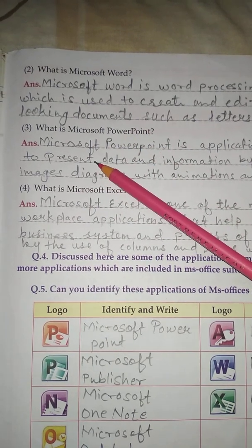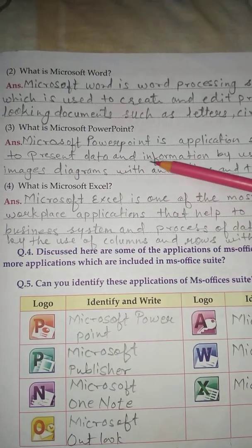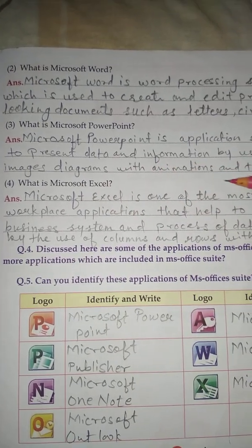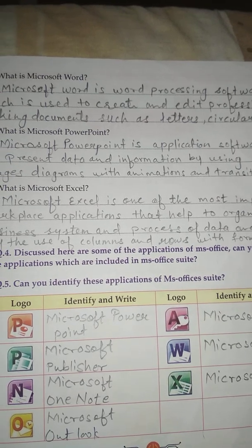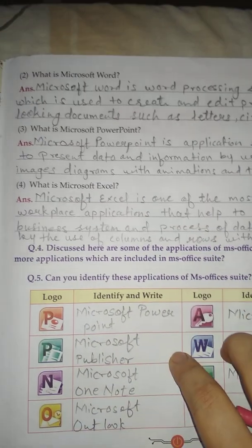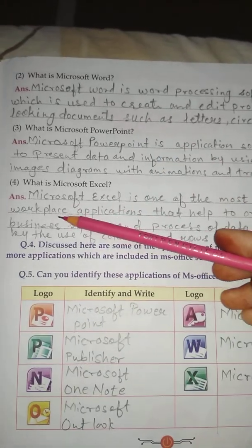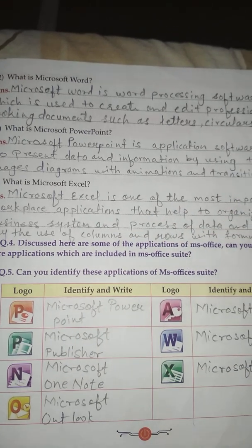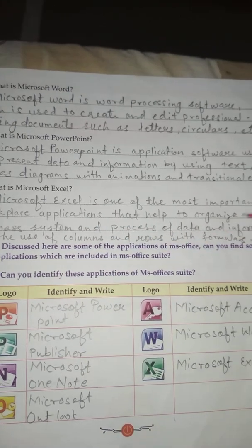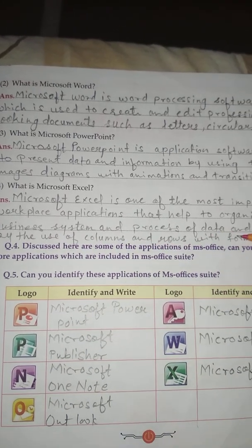No. 3 - What is Microsoft PowerPoint? Microsoft PowerPoint is an application software used to present data and information by using text, images, diagrams with animations and transitional effects. No. 4 - What is Microsoft Excel? Microsoft Excel is one of the most important workplace applications that help to organize business system and process of data and information by the use of columns and rows with formulas.